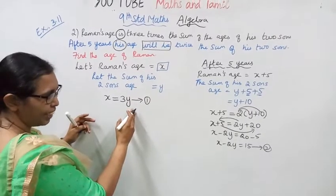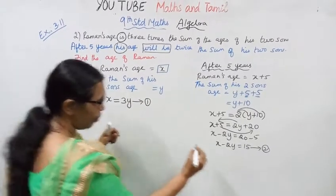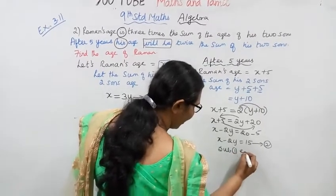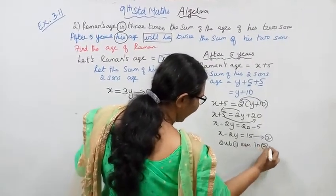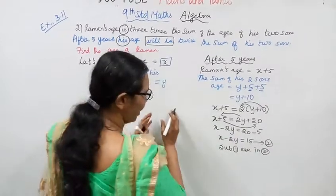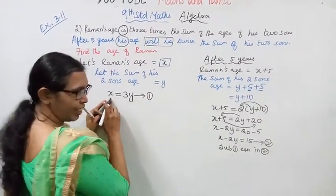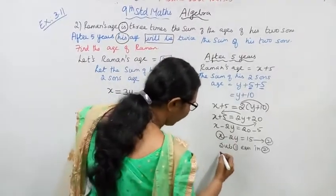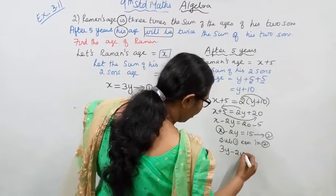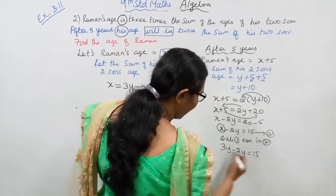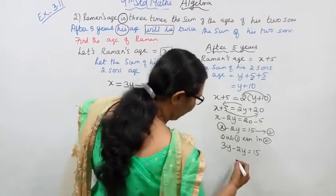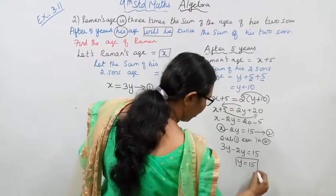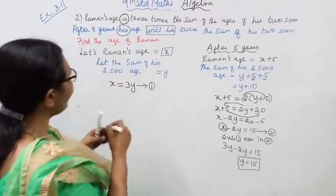First equation is x equal to 3y. This is easy and direct. How do we solve? Substitute the first equation into the second equation. Substituting x equal to 3y: 3y minus 2y equal to 15. So 1y equal to 15, therefore y equal to 15.